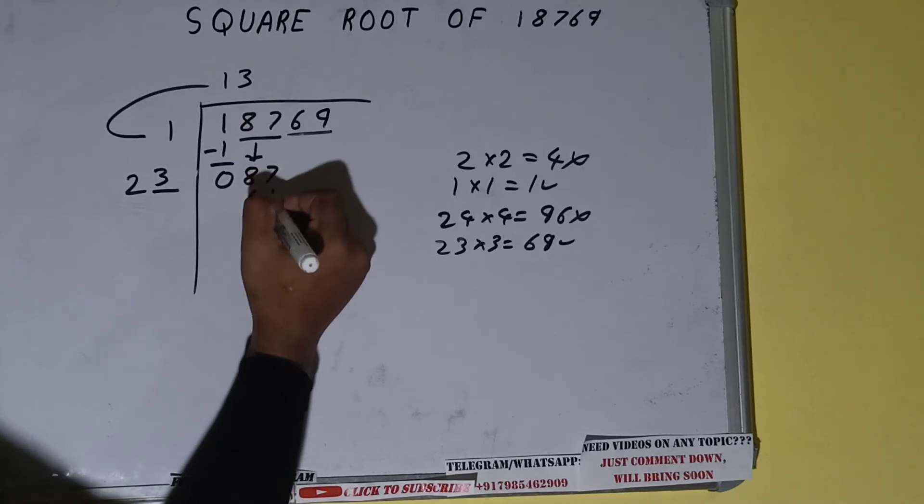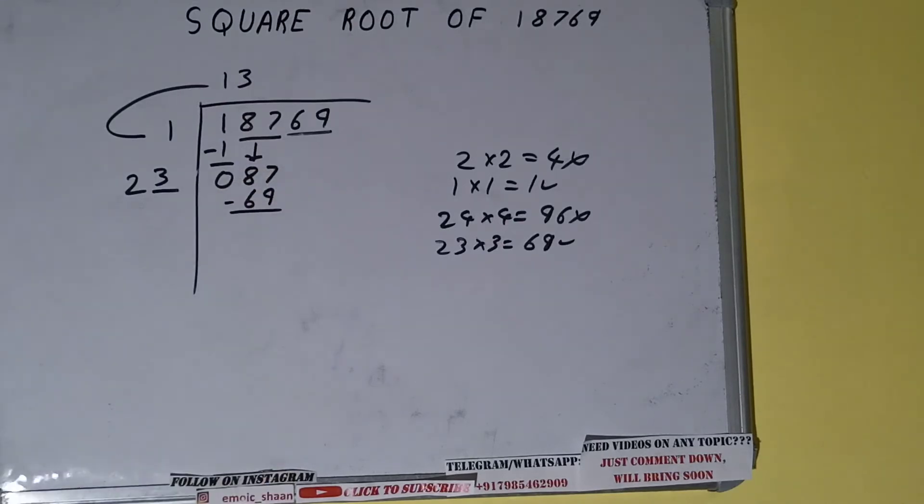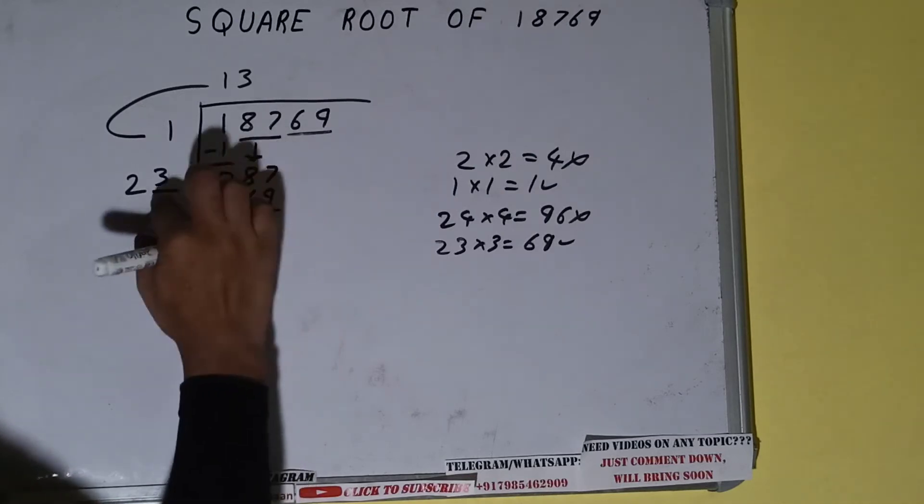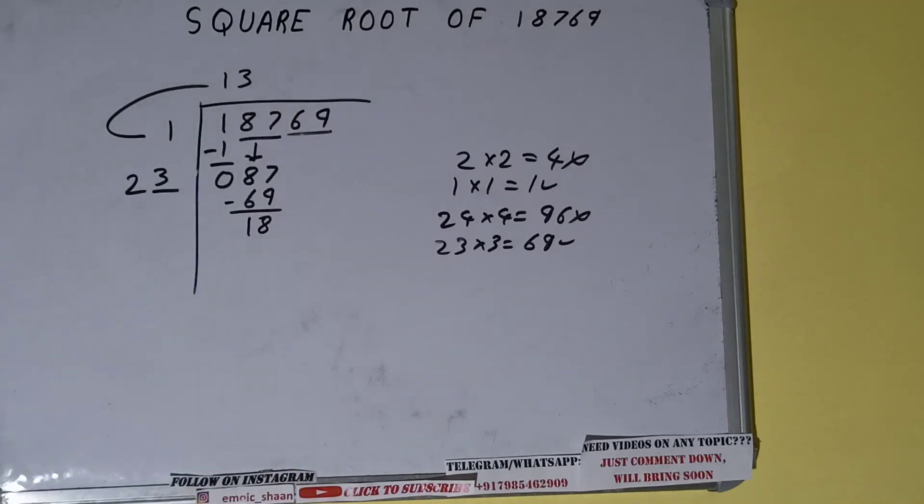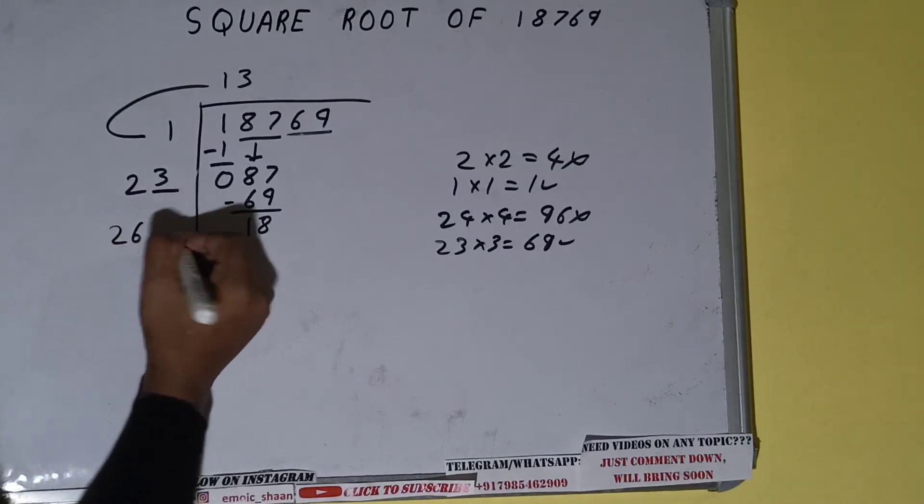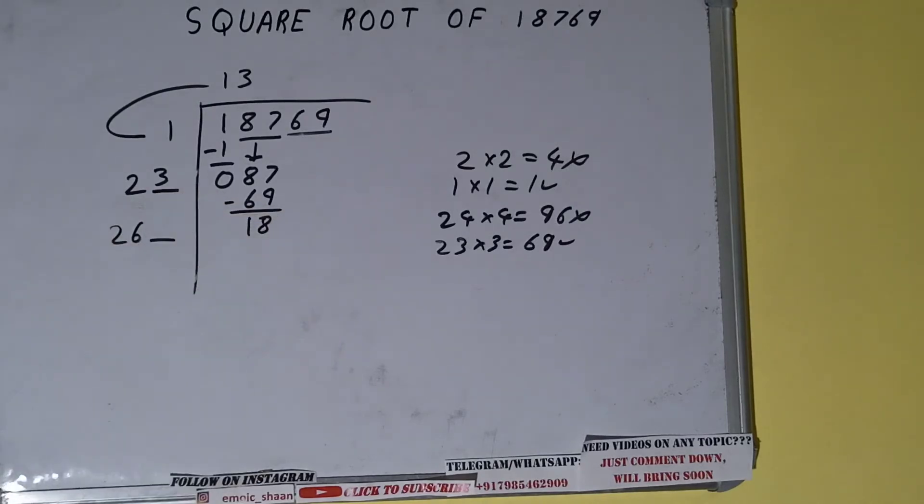So 3 here and 3 here, 69 subtract, and 18 will be left. Now 23 into 3 we did, so add both: 23 plus 3 will be 26. Write it here and keep a digit extra. And this number we need to make it big, so bring the next pair down and it will become 1869.